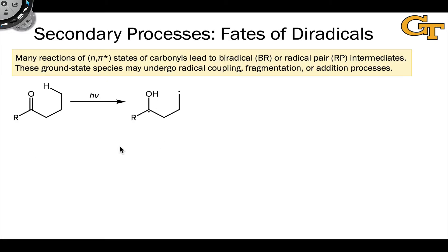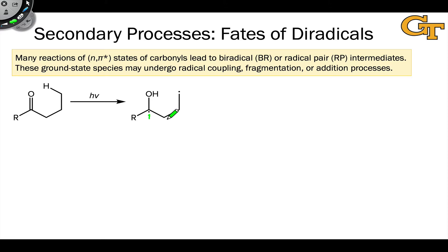For example, one reaction that generates a diradical — a 1,4-diradical — is gamma hydrogen abstraction, where a hydrogen at the gamma position with respect to a carbonyl group is abstracted upon photoexcitation of the carbonyl. This leads to a 1,4-diradical structure, familiar from additions to alkenes that we saw in the last video.